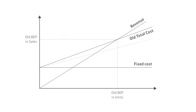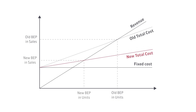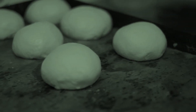A lower unit cost will move the breakeven point to the left. This means that we will achieve it faster or, to be more precise, by selling fewer units. The breakeven point in sales will also be lower. With a lower unit variable cost, the bakery can reach the breakeven point by selling fewer buns.